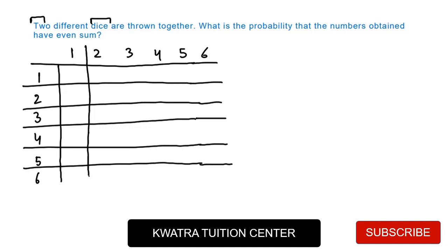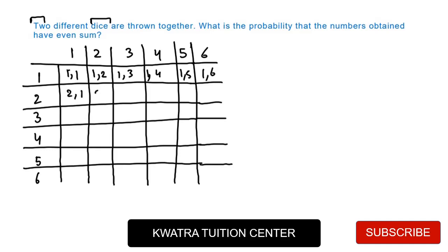So what will be our first outcome? It will be 1,1, then 1,2, 1,3, 1,4, 1,5, 1,6. So please have a look here. And in the second case, what will be our first outcome? 2,1, 2,2, 2,3, 2,4, 2,5, 2,6. Then we have 3,1, 3,2, 3,3, 3,4, 3,5, and in the last we will have 3,6.